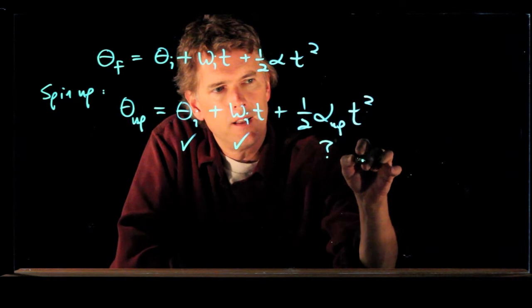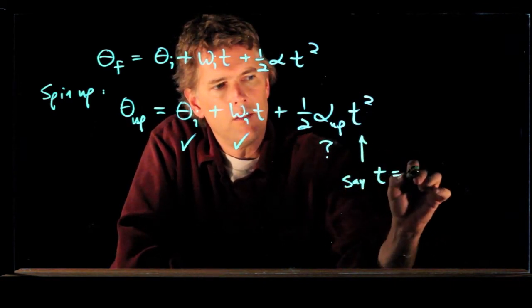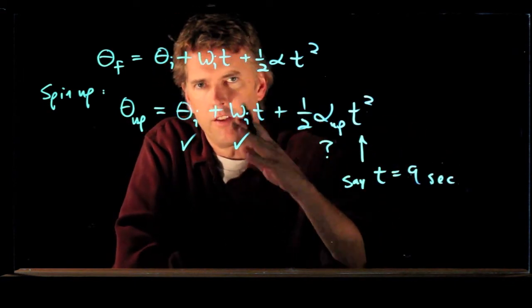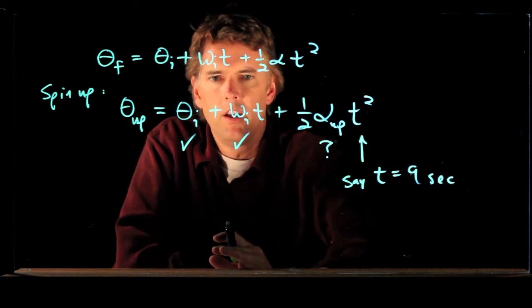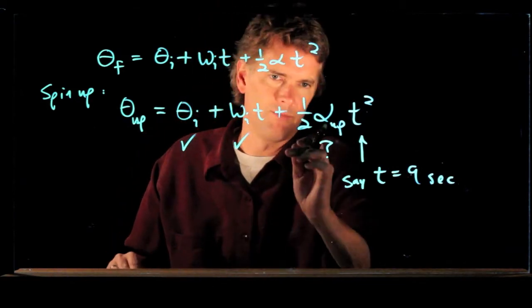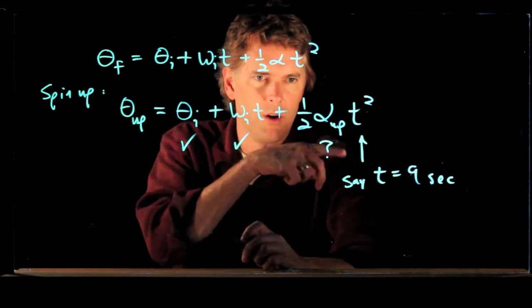But let's give you t. Let's say t is 9 seconds, so it takes 9 seconds for this thing to spin up from rest to a final omega f. This equation doesn't necessarily help us very much because we don't know alpha up.